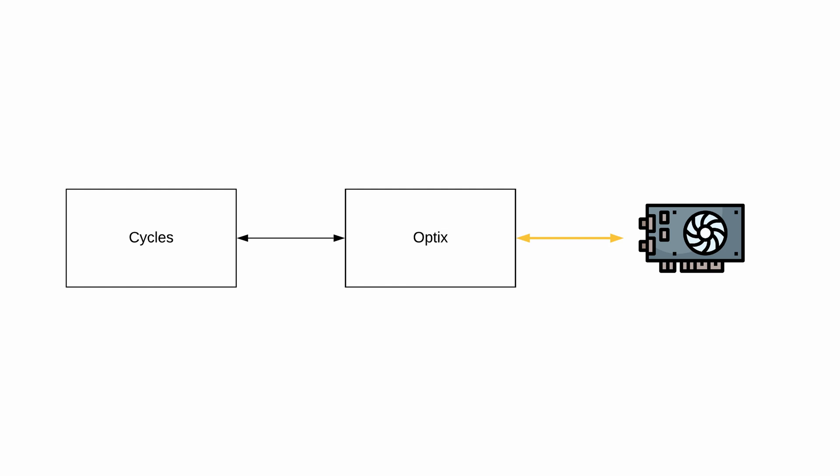OptiX has already existed for a while and we all know it's fast. But now that the Blender Foundation optimized all the fancy algorithms in the render engine Cycles and thus gave us Cycles X, we get such an amazingly well-optimized rendering pipeline on the software side. Let's take a look at what kind of difference that can make in some benchmark scenes.